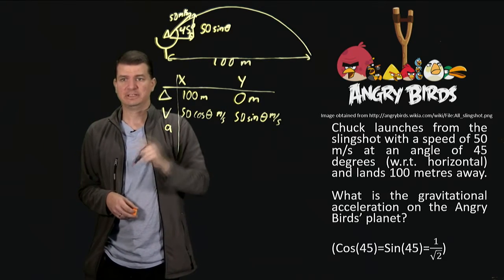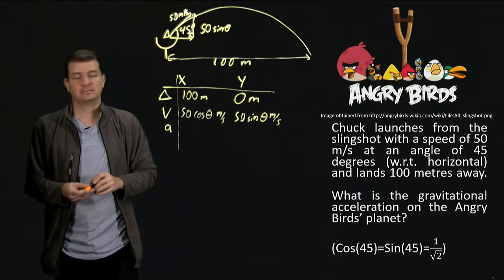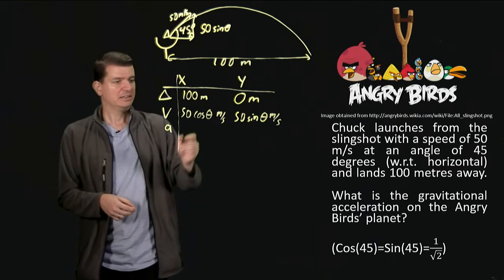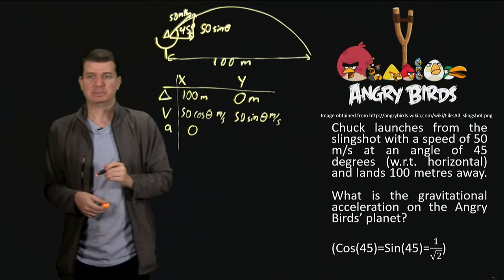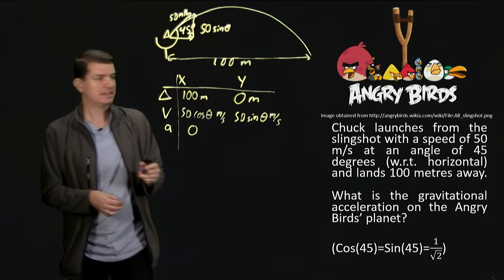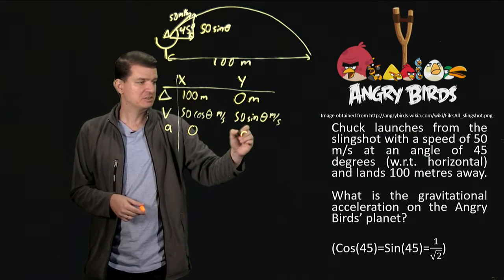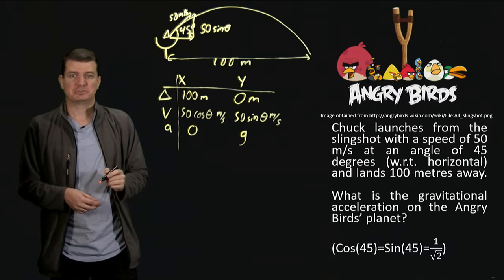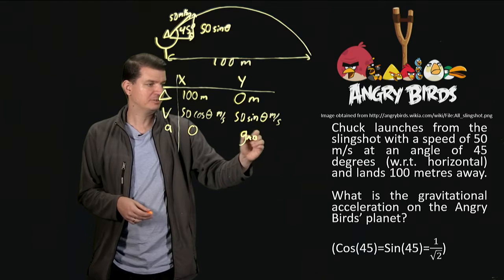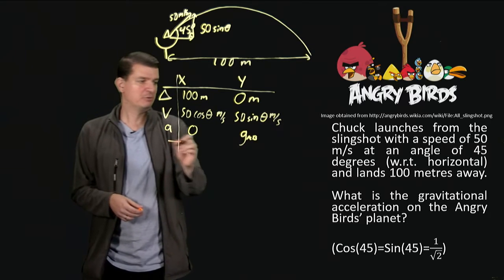Now, in the x direction, what's the acceleration? Well, let's think about this carefully. Chuck is a very nice aerodynamic bird, so there's going to be very little air resistance, so the acceleration should probably be 0. On the other hand, in the y, well, that's exactly the acceleration that we need to find. That's that gravitational acceleration, so I'll just put g. Just reminding ourselves, though, that this is g in the Angry Birds world, not g for the Earth. So that's what we're looking for.